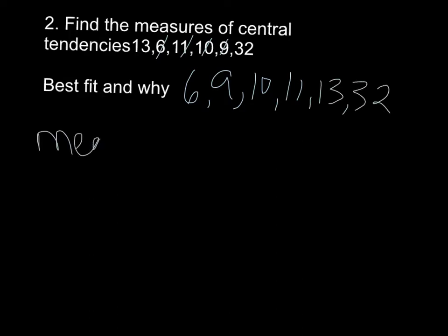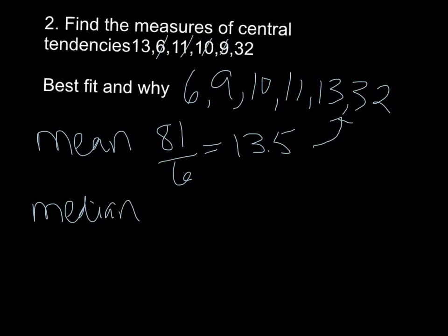All right, so my mean, when I add these up, I got 81 and there's 6 numbers. That's going to give me 13.5. Now if you notice, 13.5 is way towards the end. So median is my middle. Here you notice I have 6, so my median is right in between 10 and 11. So I'm going to add those together, divide by 2, and I get 10.5.